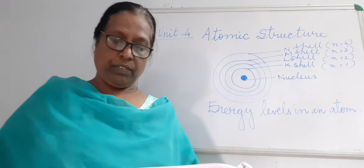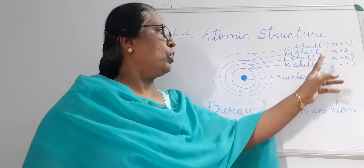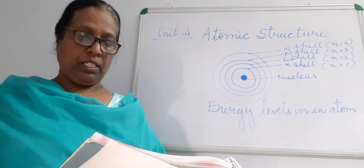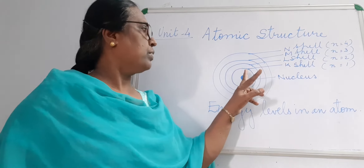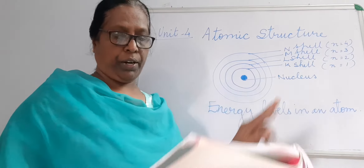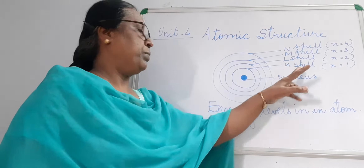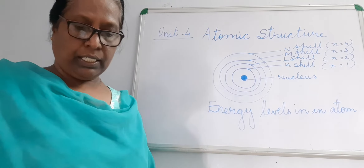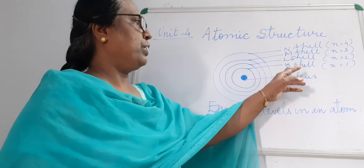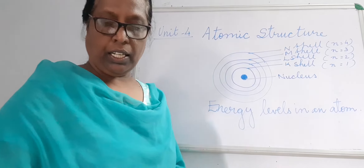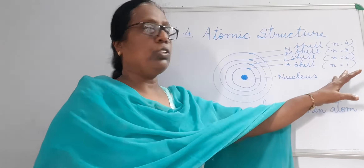These energy levels are numbered 1, 2, 3, starting from the nucleus. These numbers are called principal quantum numbers. The energy levels are designated as K shell, L shell, M shell, and N shell. Each shell is also numbered, and the shell closest to the nucleus is shell number 1.